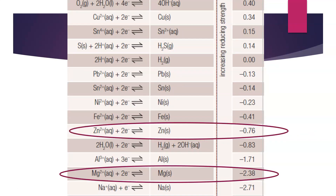If we place a zinc/Zn²⁺ half cell with a magnesium/Mg²⁺ half cell, zinc is now the stronger oxidant. This means Zn²⁺ will be reduced, forming the cathode, and magnesium will be oxidized, forming the anode. This is because magnesium is a stronger reductant than zinc — it's a more reactive metal, so it passes its electrons to zinc, forcing zinc to be reduced.